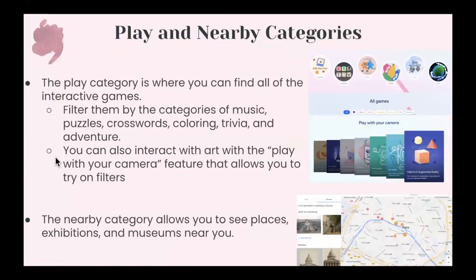Next is the Play category, which is many people's favorite, and here you can find all of the interactive games that Google Arts and Culture has to offer. You can filter them by the categories of music, puzzles, crosswords, coloring, trivia, and adventure based on the type of game you want to play. You can even interact with the art by clicking Play with Your Camera, which allows you to try on filters and adjust the art in whatever way you want. You can also click on Nearby to see places, exhibitions, and museums located near you.